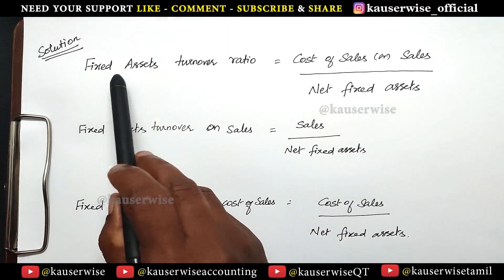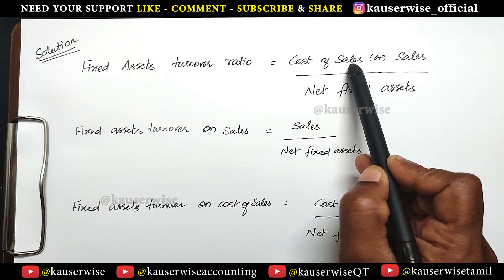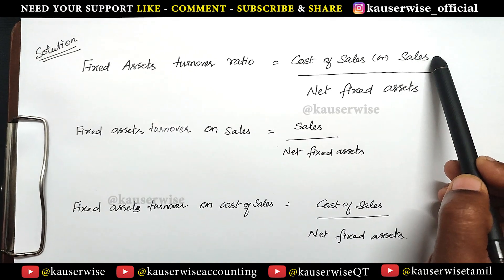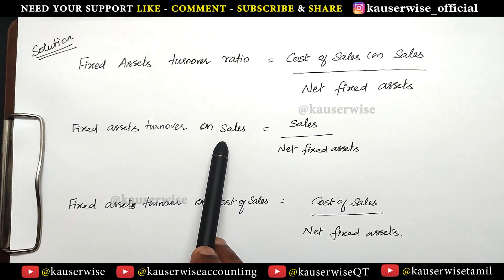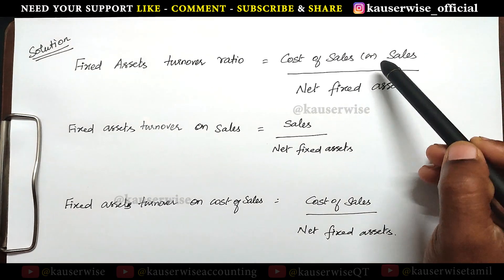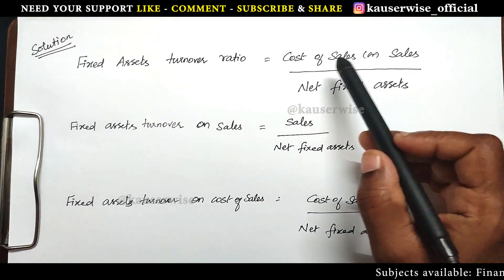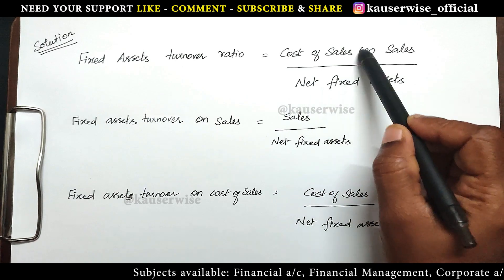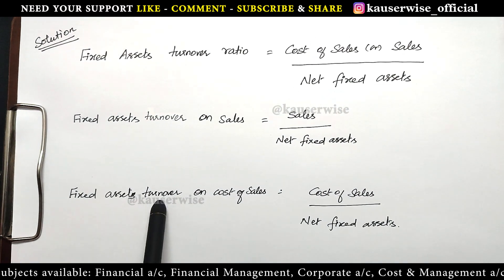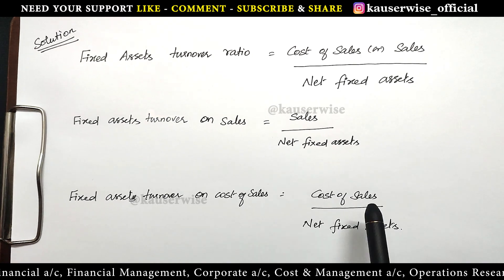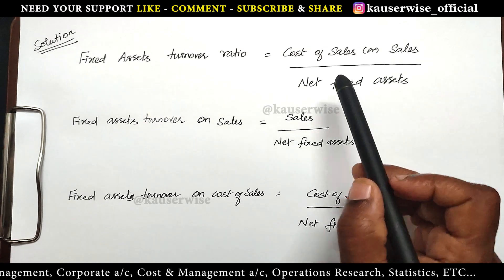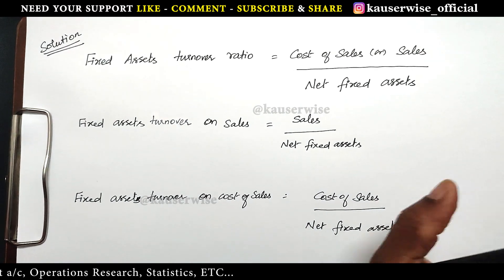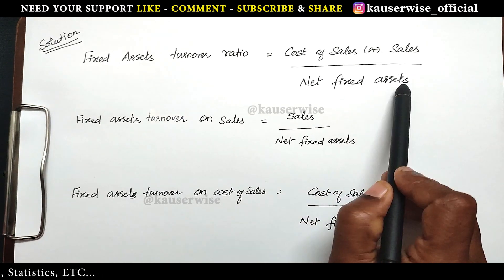This is the formula to find out fixed asset turnover ratio. The formula is cost of sales or sales divided by net fixed asset. If you have only sales, you can calculate using: sales divided by net fixed asset. If there is any gross profit given in the problem, you can calculate cost of sales using: sales minus profit. Net fixed asset is total fixed asset minus depreciation, if any; otherwise take total fixed asset as net fixed asset.